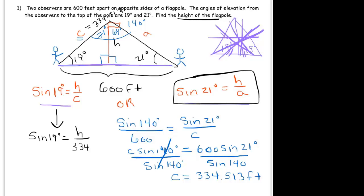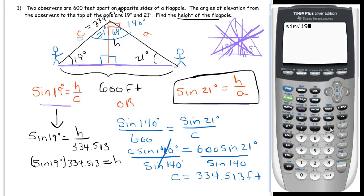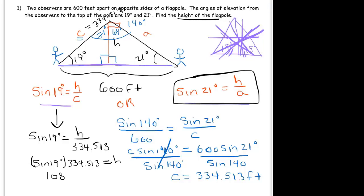And that means that H is equal to 19 degrees times 334.513. We punch this in the calculator. And we get 108.907 feet.